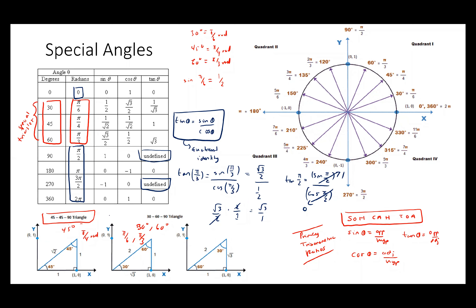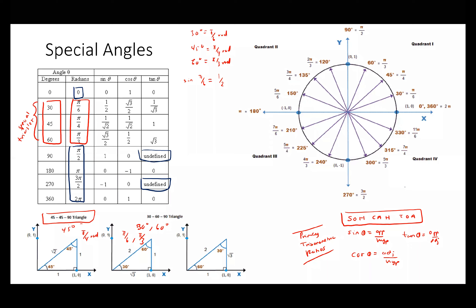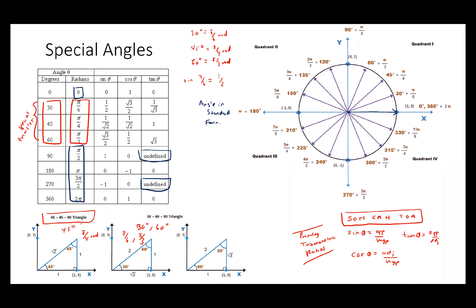I want to show you some applications using exact values. Let me draw your attention to the unit circle. The unit circle is a representation of an angle in standard form. An angle in standard form is where the initial arm — your reference ray — is placed at the positive x-axis.